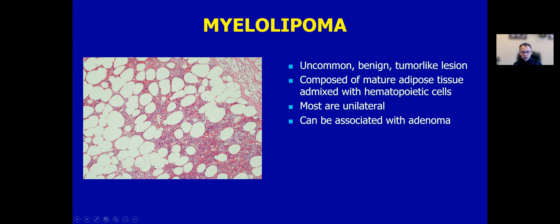Finally, a few words about myelolipoma. It is an uncommon benign tumor-like lesion composed of mature adipose tissue admixed with hematopoietic cells. Look for multilobated megakaryocytic cells, erythroblasts, myeloblasts, and megagranular cells. It can also be associated with adenoma, and most are unilateral in presentation.